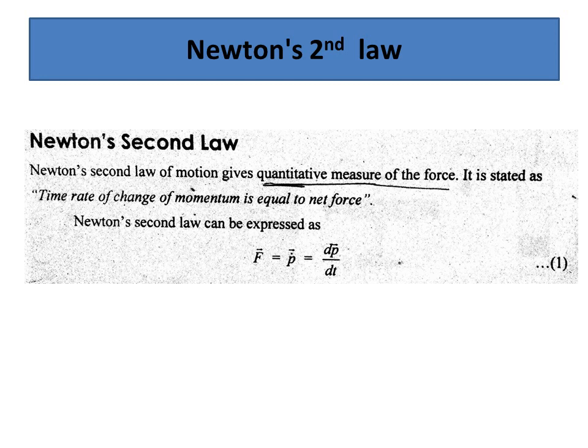Newton's second law: Newton has given us a mathematical term. F is equal to p-dot, that is dp over dt. Momentum p is equal to mv. Since mass is constant, the differentiation with respect to time acts on the velocity of the particle.